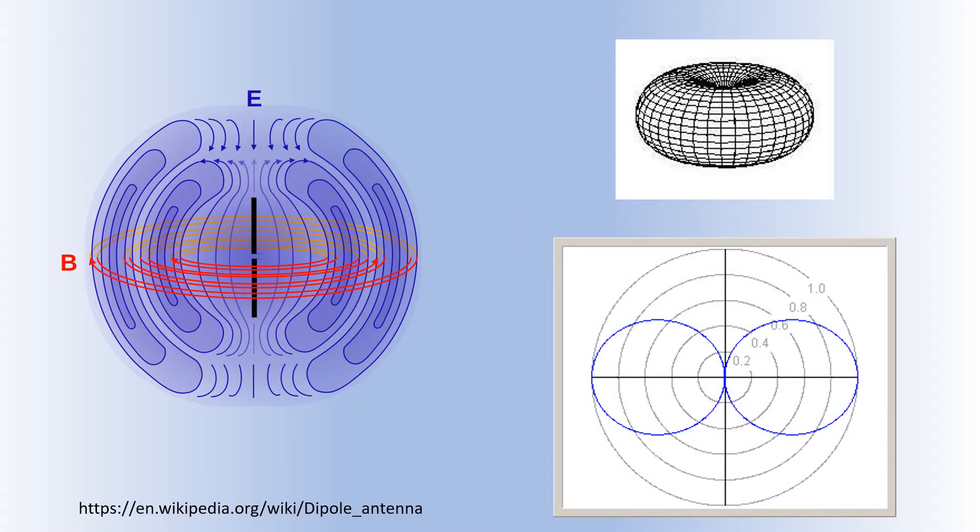These diagrams from Wikipedia article show the radiation pattern of a vertical dipole antenna.